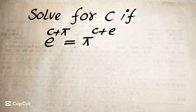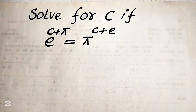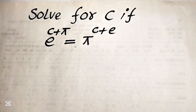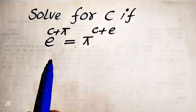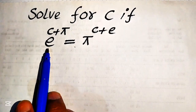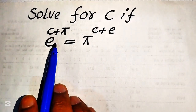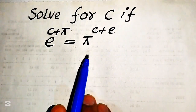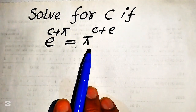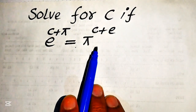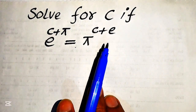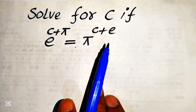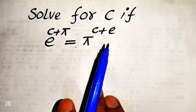Hello everyone, welcome. We solve this nice math olympiad algebra problem. Here we have e to the power of c plus pi equals pi to the power of c plus e, and we solve this problem for the values of c.